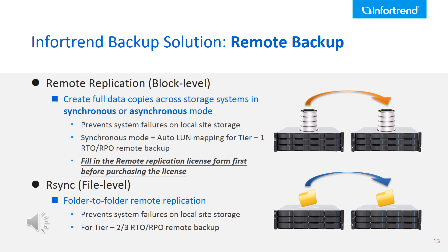The second remote service is RTHINK — a simple, folder-based remote replication via file-level protocol. Since RTHINK does not have synchronous mode and there is no automatic share folder mounting service when local site storage fails, RTHINK can only support a Tier 2 RTO and RPO backup solution.